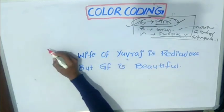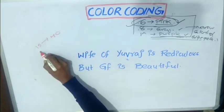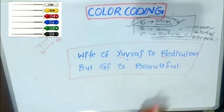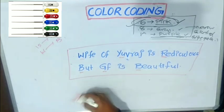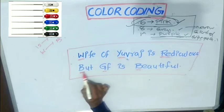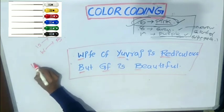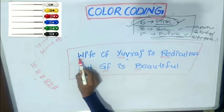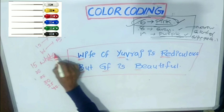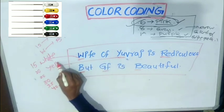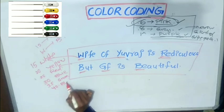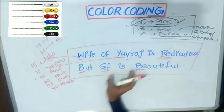I would like to give a mnemonic for remembering the colors from 15 to 40, that is from white to black. I have used this mnemonic during my preparation: 'Wife of Euras is ridiculous, but girlfriend is beautiful.' If you observe 15 to 40 — 15, 20, 25, 30, 35, and 40 — wife of Euras is ridiculous, but girlfriend is beautiful.